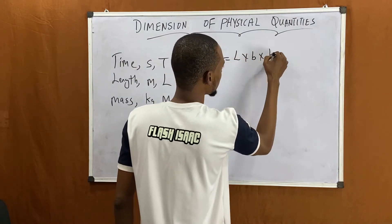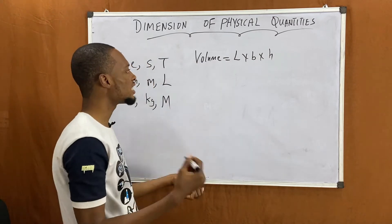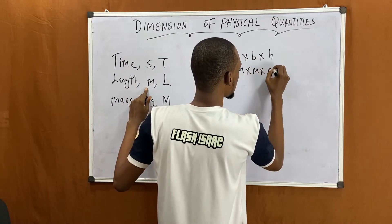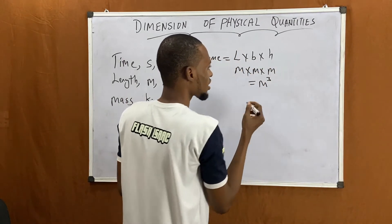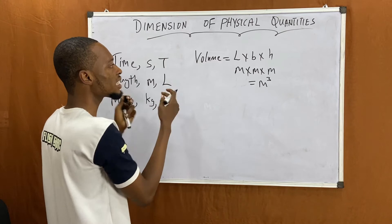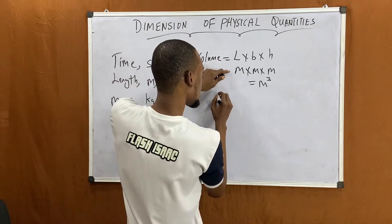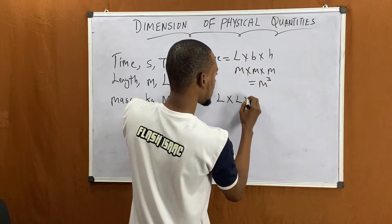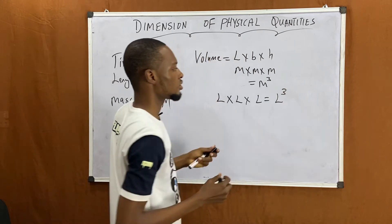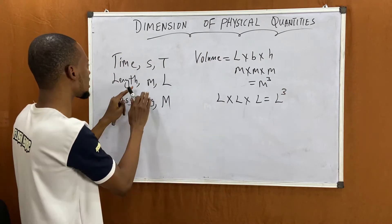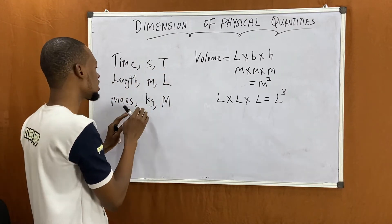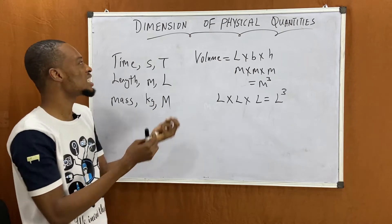For example, volume is length times breadth times height. Earlier we used meter × meter × meter, which equals meter cubed as the unit. But while using dimensions, volume will be L × L × L, which gives us L³. So basically, instead of s for time we use T, instead of m for length we use L, and instead of kg for mass we use M. That's what dimension is about.